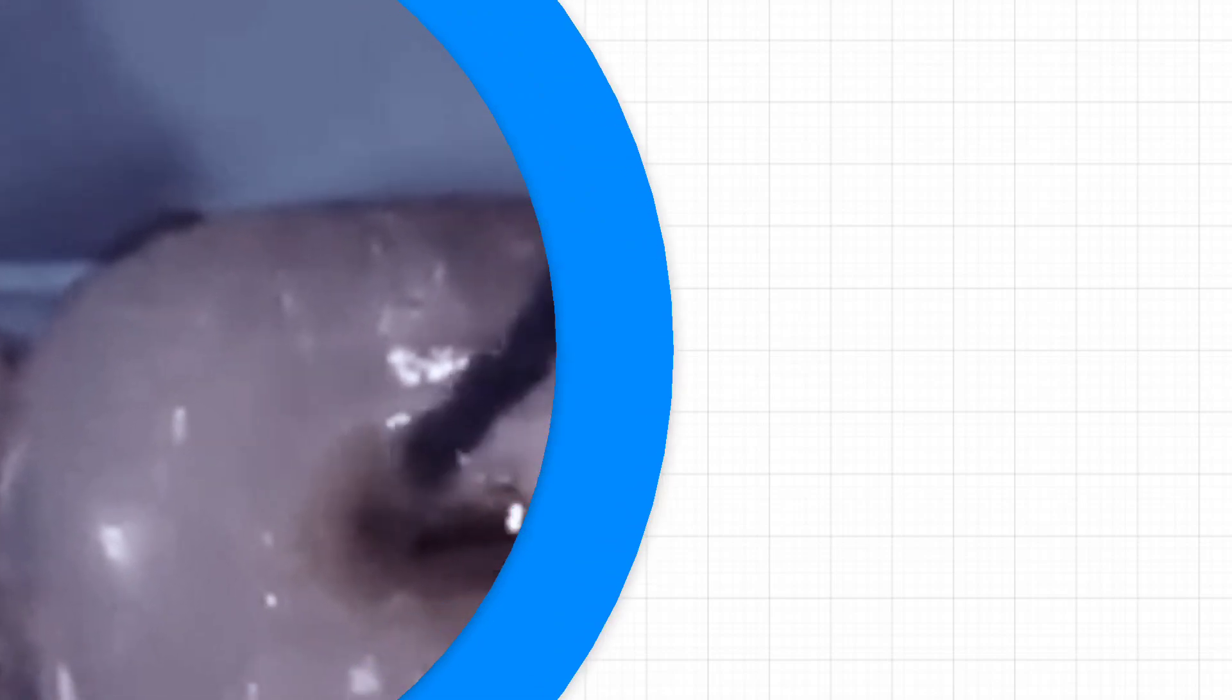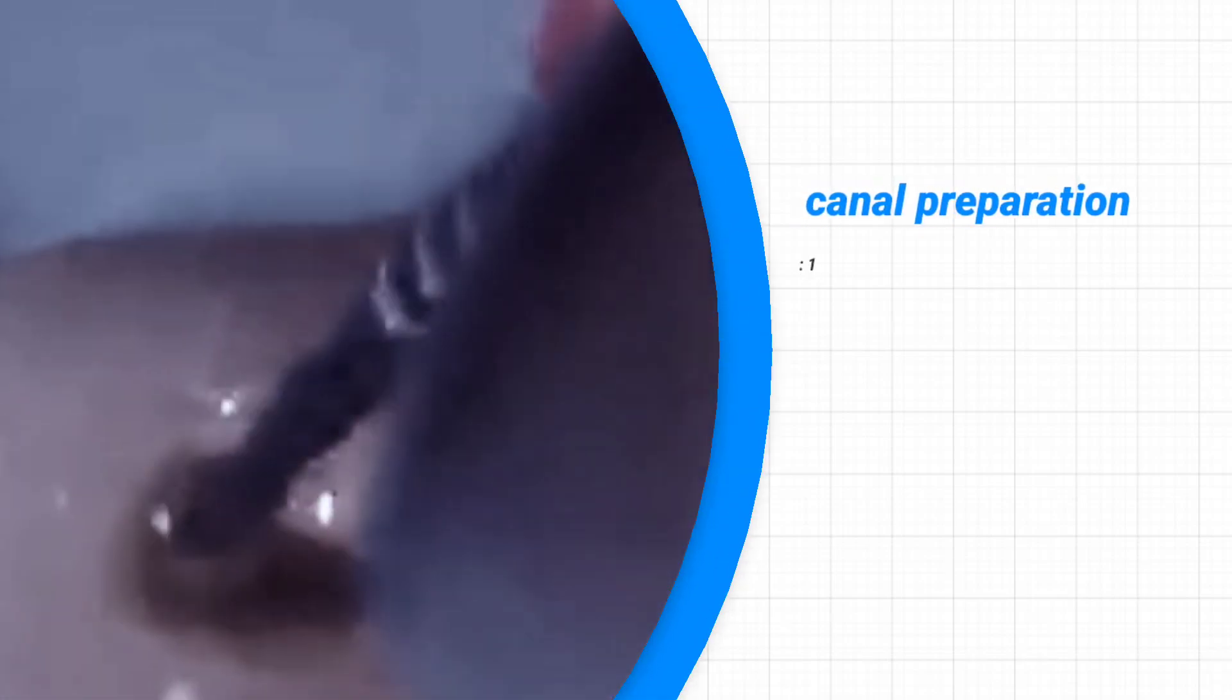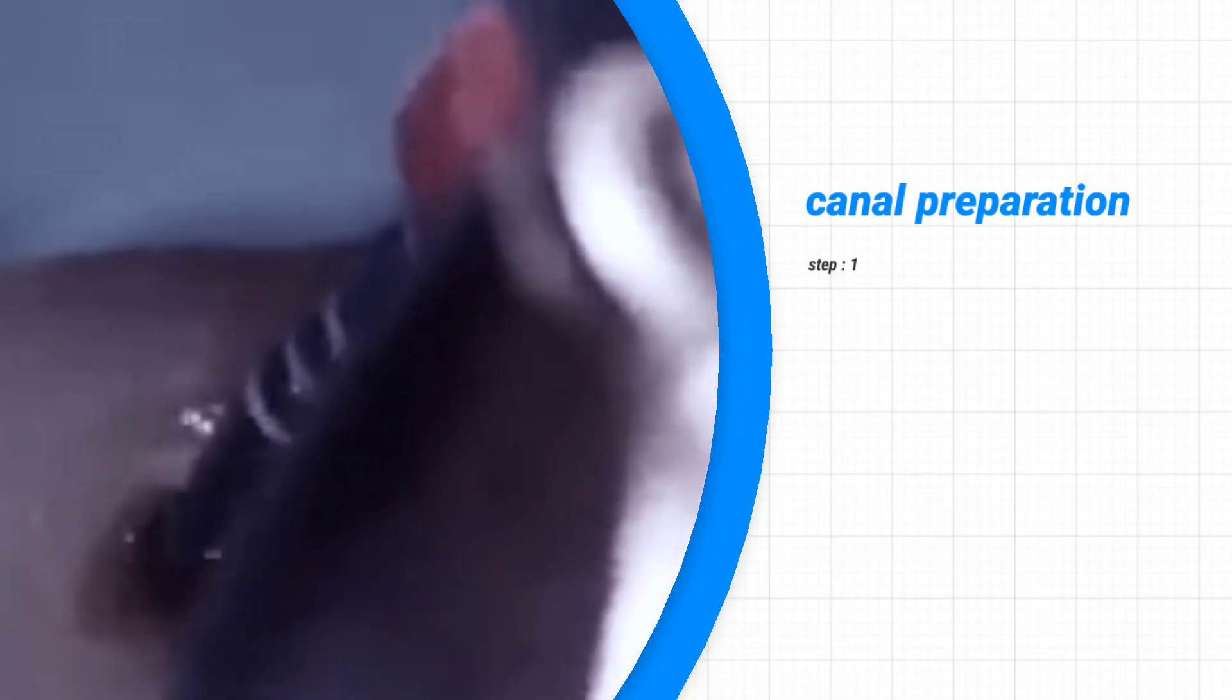The first step in the biomechanical preparation is preparing the root canal to the desired taper with the help of an endodontic file.